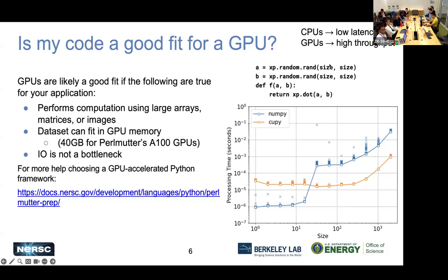If your data set can fit in GPU memory, that's going to be good for quick computations. Standard GPU memory on Perlmutter is 40 gigabytes, but we do have nodes with larger GPU memory of 80 gigabytes. GPU performance is mainly going to be for high throughput and quick calculations when working with large arrays, matrices, or images.